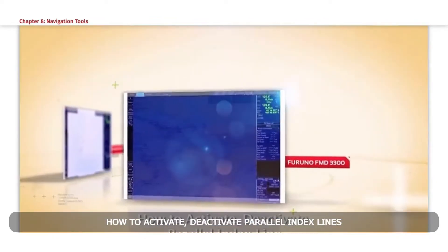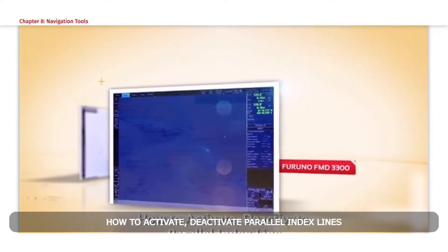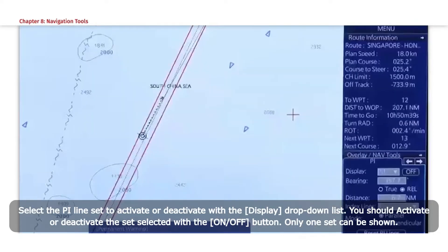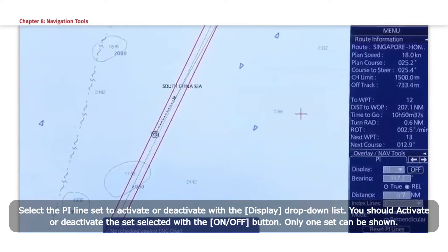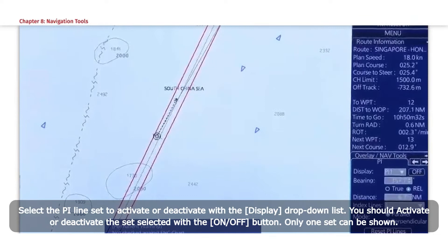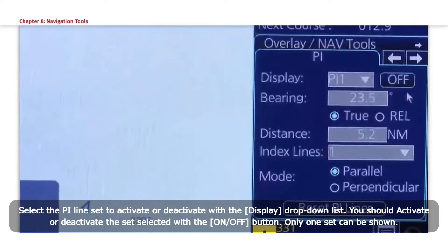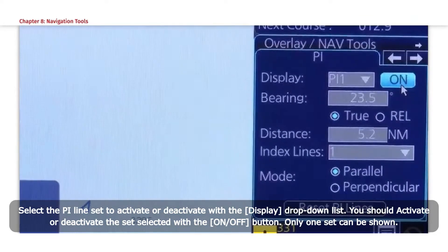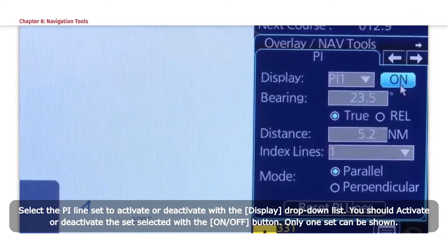How to Activate/Deactivate Parallel Index Lines: Select the PI Line set to activate or deactivate with the Display drop-down list. You should activate or deactivate the set selected with the ON or OFF button. Only one set can be shown.